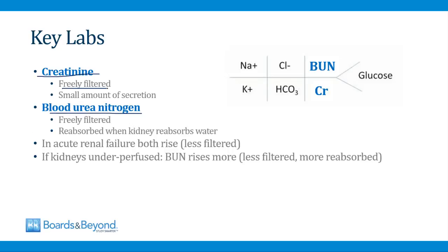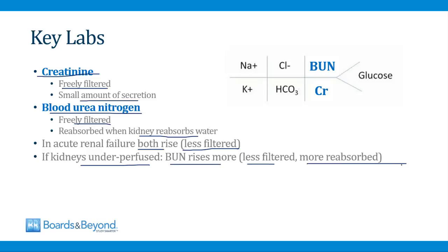The two most important labs to identify patients with acute renal failure are measurement of the serum creatinine and the serum BUN. Creatinine is freely filtered by the glomerulus, with a small amount of secretion by tubular epithelial cells. BUN is also freely filtered; however, it is reabsorbed when the kidneys are trying to hold on to water. In acute renal failure, both of these will rise. However, if the reason the kidneys are filtering less blood is because they are underperfused, then the BUN will rise more — because less will be filtered and more will be reabsorbed.